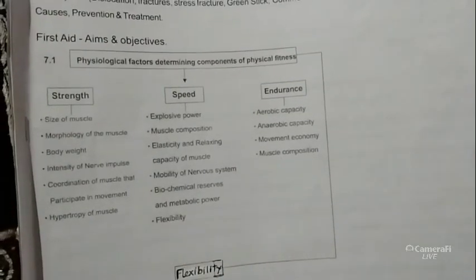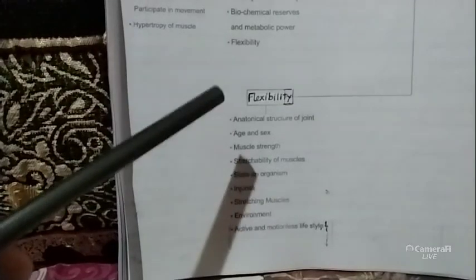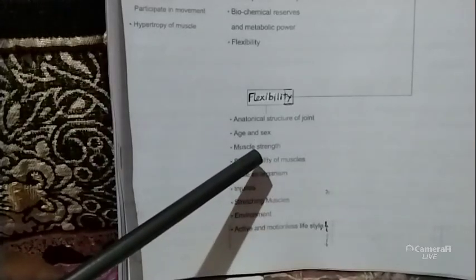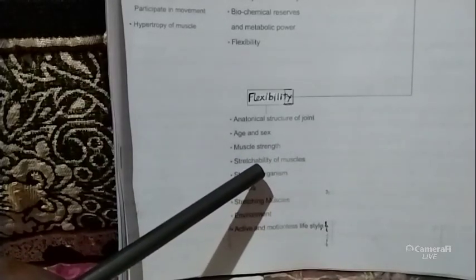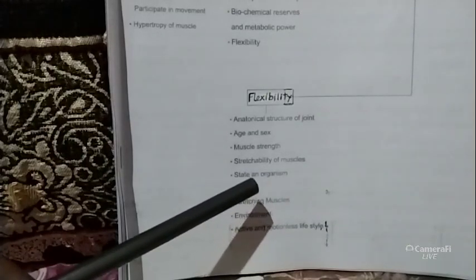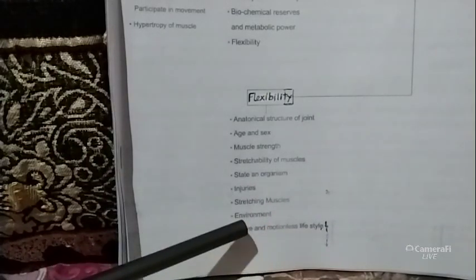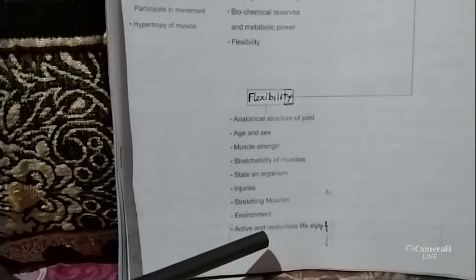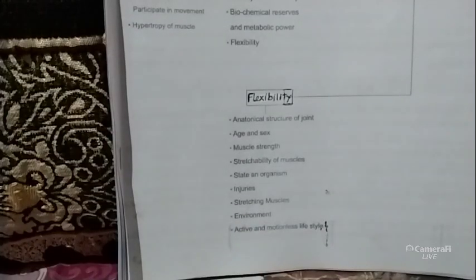For flexibility, the factors include anatomical structure of joints, age and sex, muscle strength, stretchability of muscle, state of organism, injuries, stretching, muscle environment, and active versus sedentary lifestyle. These parts are all included under the four components: strength, speed, endurance, and flexibility.